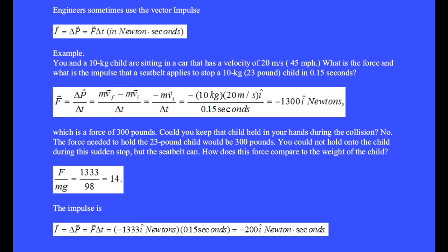Engineers sometimes use the vector impulse I equals delta-P, which equals force multiplied by the duration of time, and is measured in Newton-seconds. For example, you and a 10-kilogram child are sitting in a car moving at 20 meters per second (45 miles per hour). What is the force and what is the impulse that a seatbelt applies to stop the 10-kilogram child (23 pounds) in 0.15 seconds?